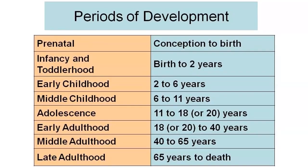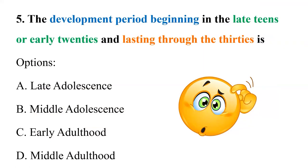Development begins with prenatal development from conception to birth, then infancy or toddlerhood from birth to two years, early childhood from two to six years, middle childhood from six to eleven years, and adolescence from eleven to eighteen or twenty years. Then early adulthood spans eighteen or twenty to forty years, middle adulthood from forty to sixty-five years, and late adulthood from sixty-five years to death.